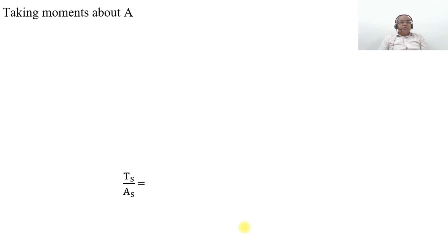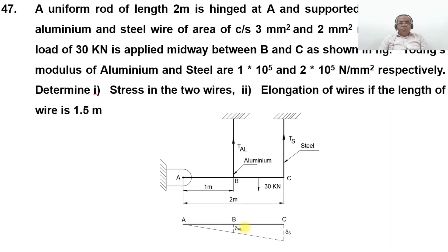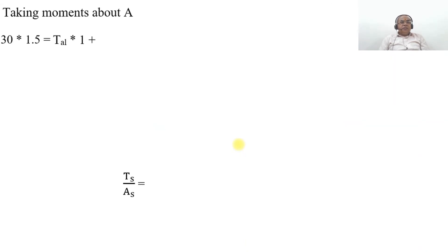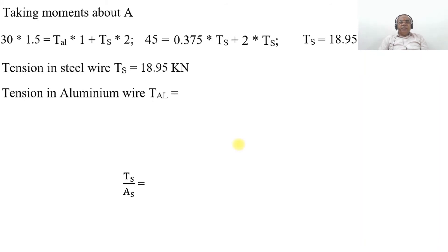Taking moments about point A: 30 × 1.5 equals TAL × 1 plus TS × 2. So 45 equals 0.375 TS plus 2 TS. On simplification, the tension in the steel wire TS equals 18.95 kN. The tension in the aluminium wire TAL equals 0.375 × 18.95, which on simplification gives 7.1 kN.